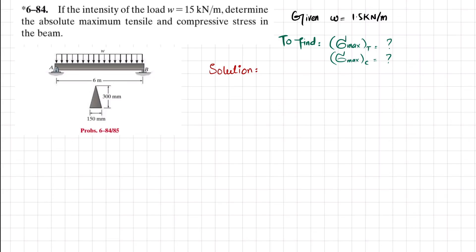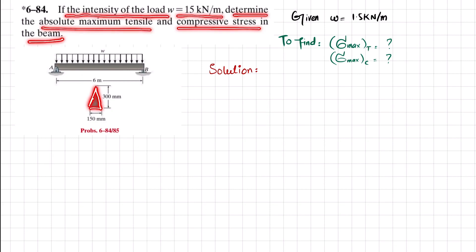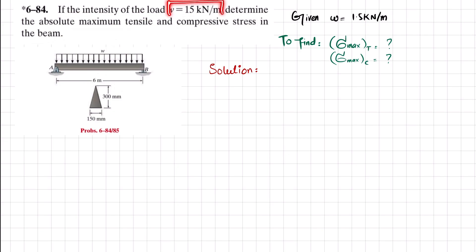Welcome back — problem 6-84. The statement is: if intensity of load w is equal to 15 kilonewton per meter, determine the absolute maximum tensile and compressive stress in the beam. The cross-section of the beam is triangular, having a base of 150 millimeters and a height of 300 millimeters. The length of this beam is 6 meters, acted upon by a uniformly distributed load w of 15 kilonewton per meter.